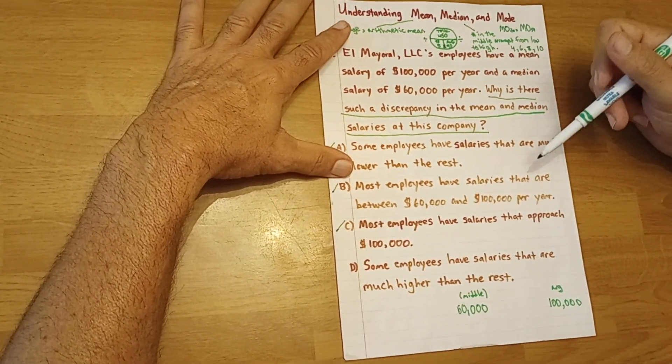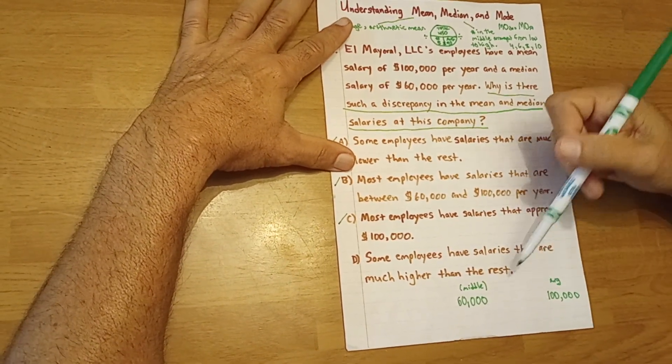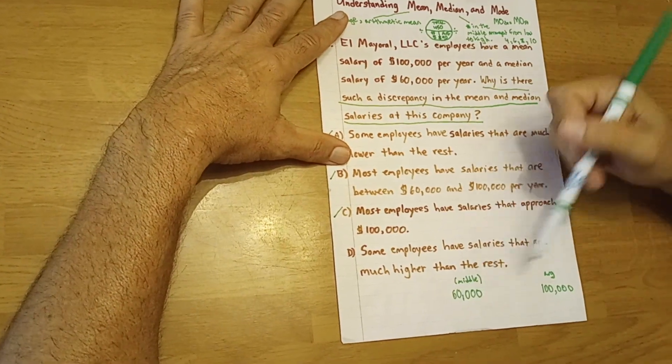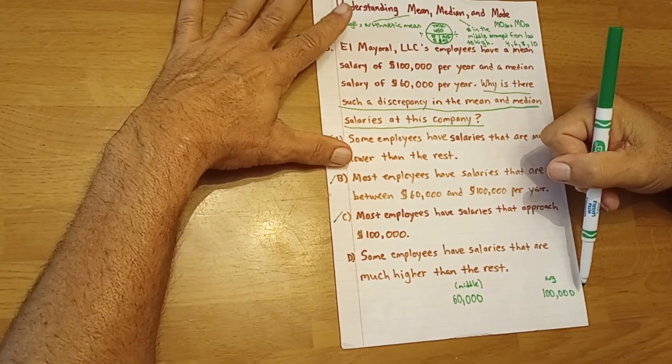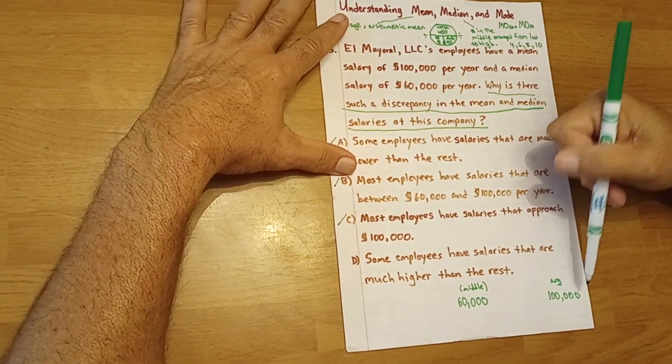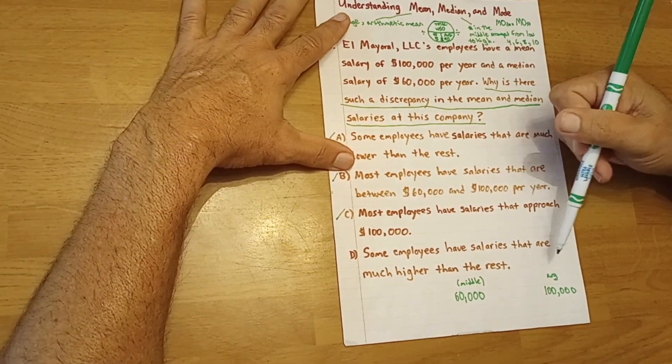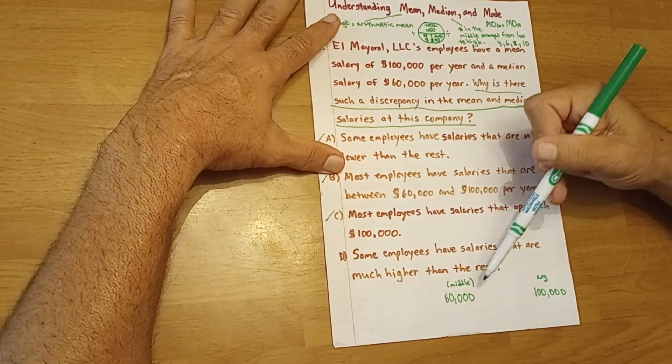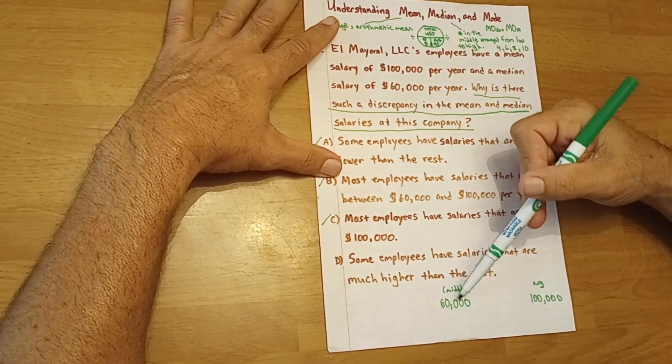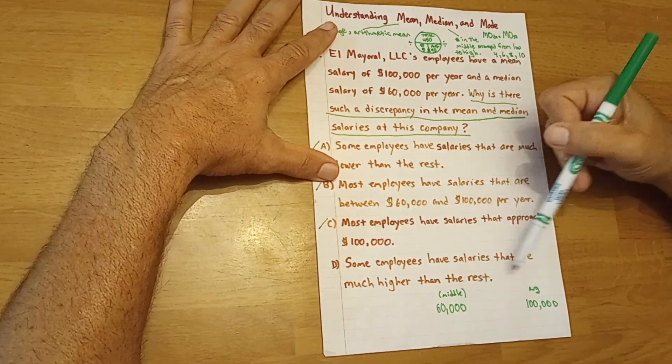So how would that happen? Well, if the middle salary is $60,000 but the average is $100,000, it would mean that probably few employees have salaries that are much higher than the rest. This would bring the number here that is in the middle to a much higher average.